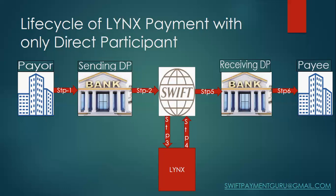In step two, the customer credit transfer payment message — whether ISO 20022 or MT103 — is sent to the SWIFT network. What SWIFT does is copy certain fields from the message: the sender bank, the sending direct participant, the receiving direct participant, the payer, the amount, and the date. That information is then sent to the LYNX payment system, which validates the available funds of the sending direct participant held at LYNX.